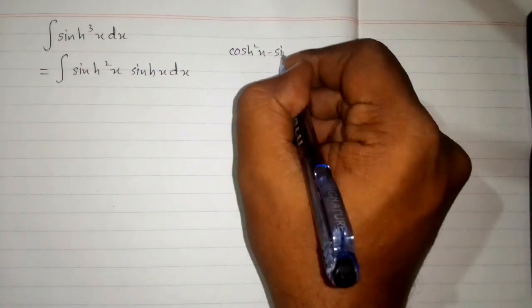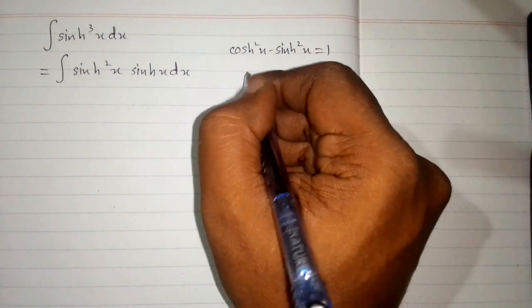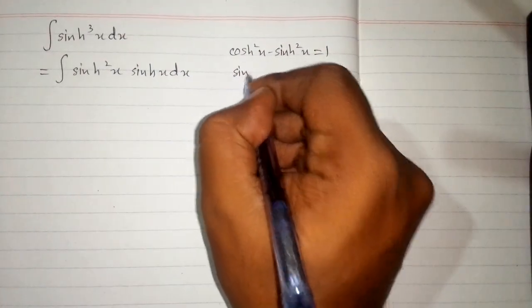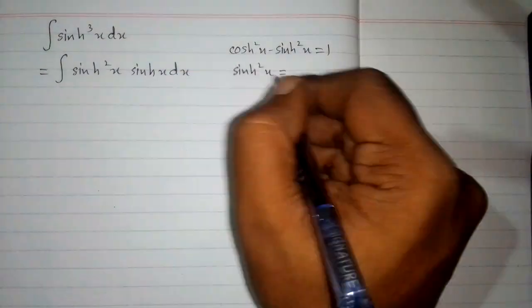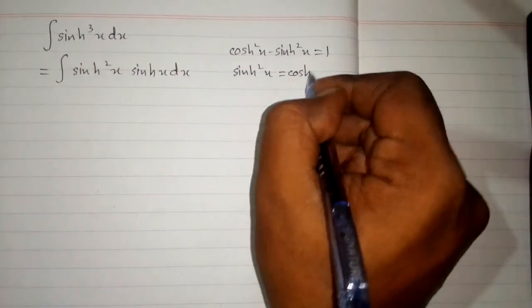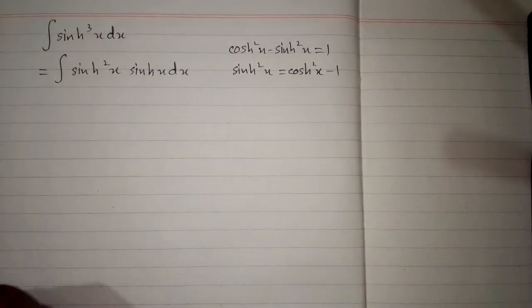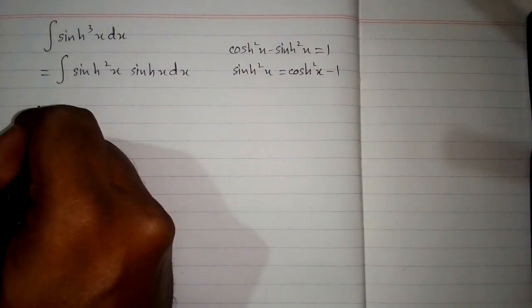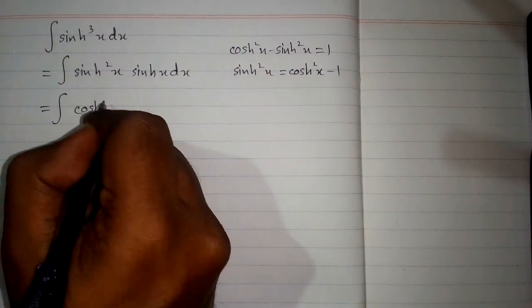x minus hyperbolic sine square x equals 1, so hyperbolic sine square x is equal to hyperbolic cos square x minus 1. So we can write hyperbolic cos square x minus 1 in place of hyperbolic sine square x.